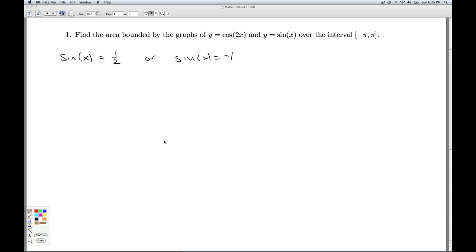There's infinitely many solutions to each of these equations, but I restrict my attention to what's going on between minus pi and pi. So the sine of x is a half between minus pi and pi. Thinking on the unit circle, I'm looking for angles here and here. I get x equals pi over 6 in quadrant 1, and 5 pi over 6 in quadrant 2. For sine x equals negative 1, that's going to be negative pi over 2. So these are where the graphs intersect.